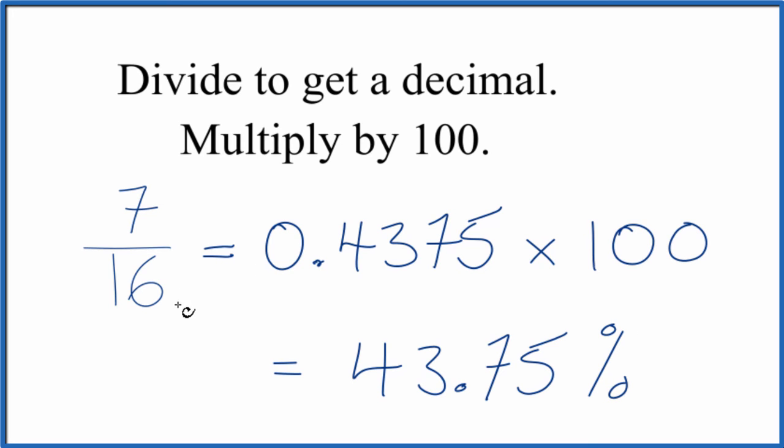So the fraction 7 over 16 gives us the percentage 43.75. What this means is that 7 is 43.75% of 16.